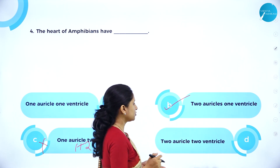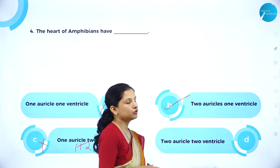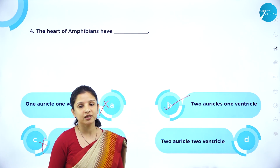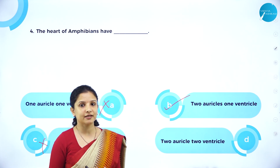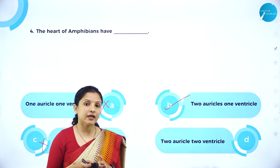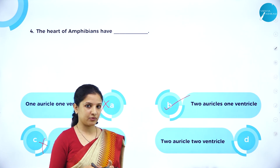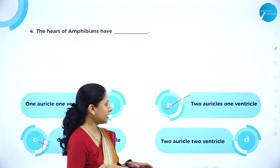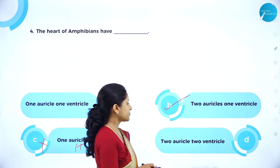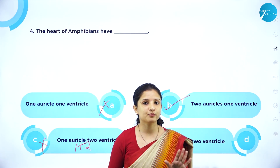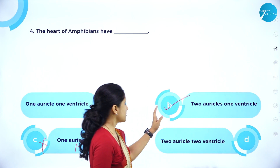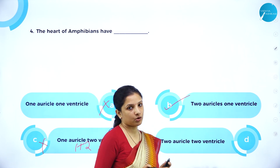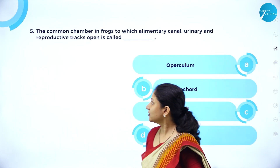Two auricles and two ventricles are usually found in Aves and mammals because they have a four-chambered heart, so option D is also not correct. The right option is option B — two auricles and one ventricle.